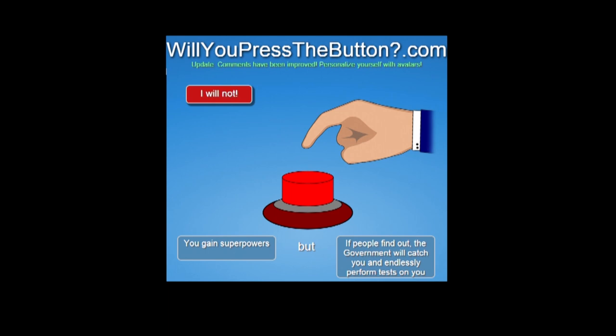You gained superpowers. But if people find out, the government will catch you and endlessly perform tests on you. I'm gonna say yes. I would do this. Especially if my superpowers kill everybody trying to perform a test on me. And I need to know what tests we're doing. Is this a can you juggle? Can you balance? How fast are you? Can you run this? Put this in your butt?